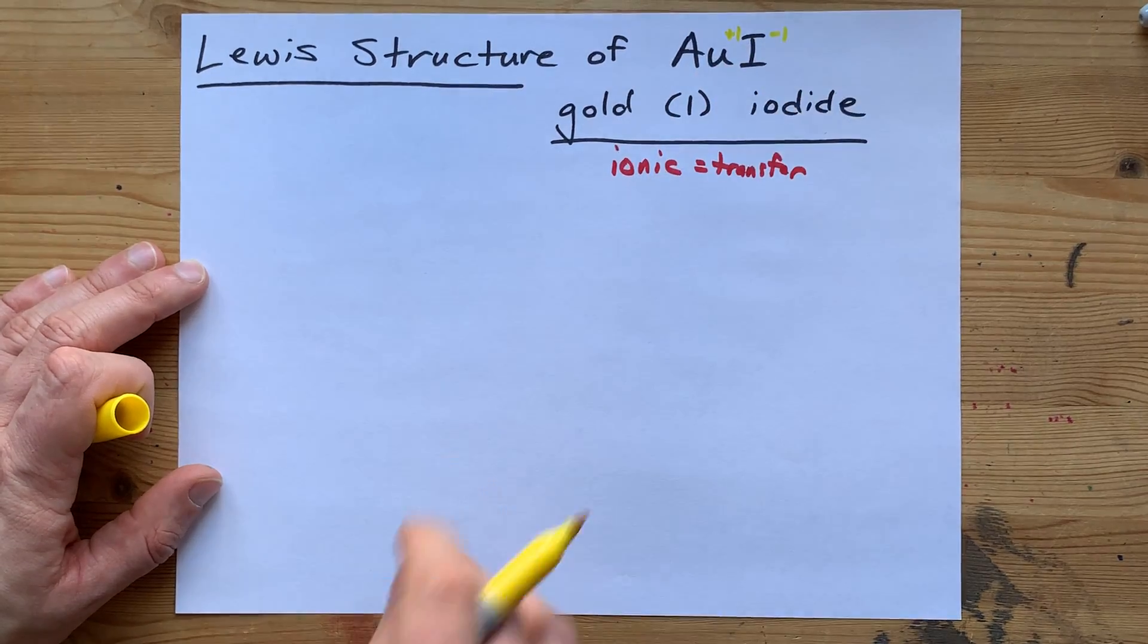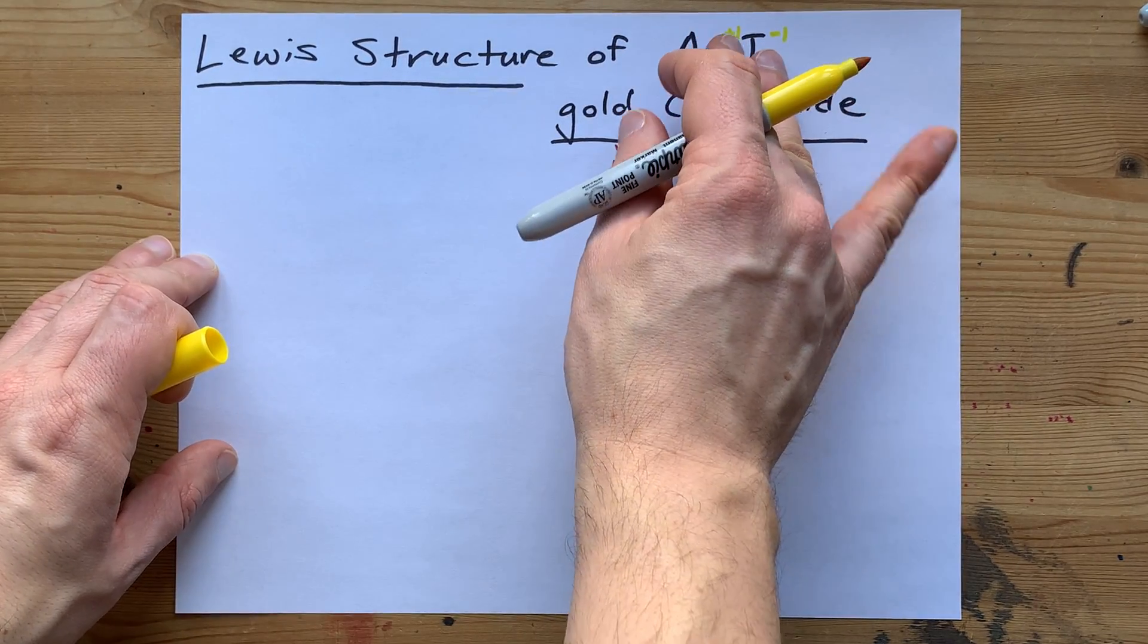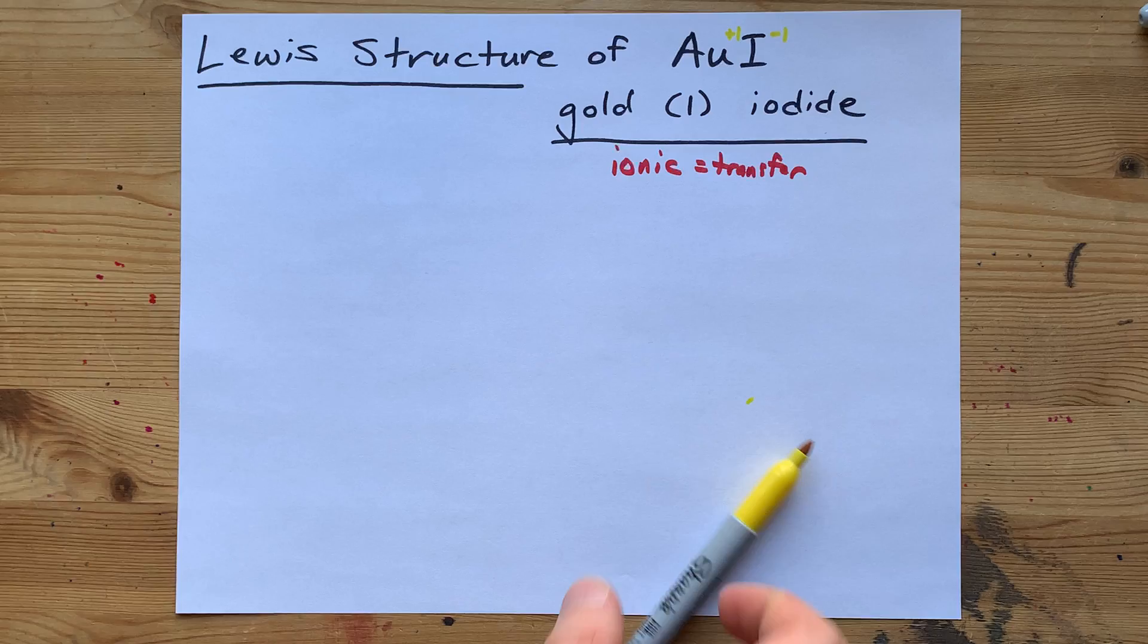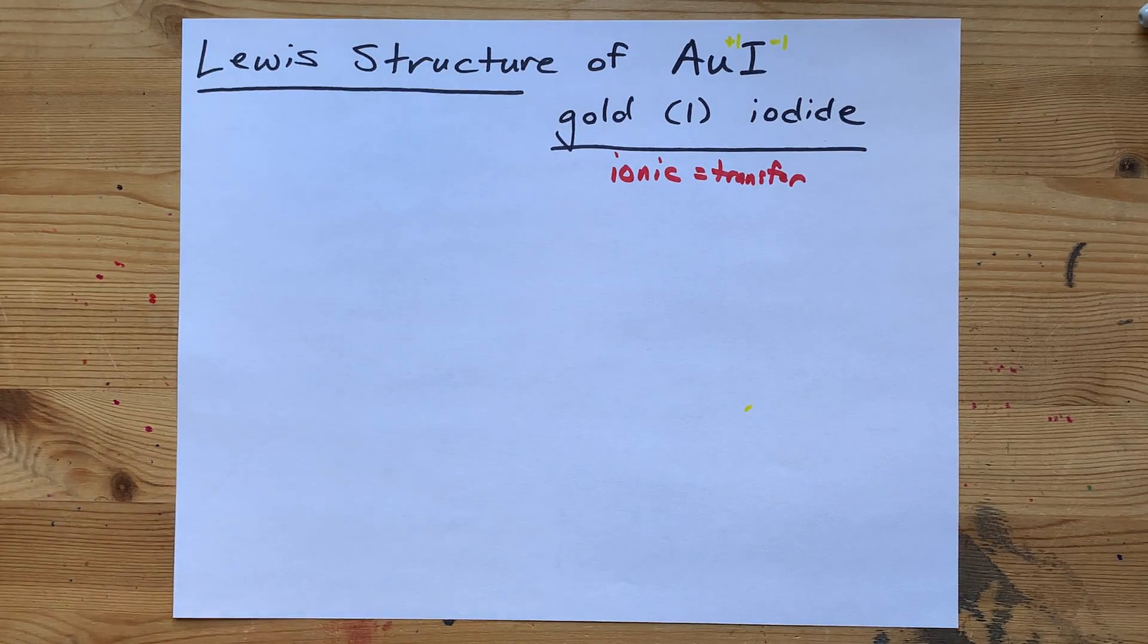Since there's one of each, it wants a charge of plus 1. Those combine to make a neutral compound with a charge of 0. And away we go.